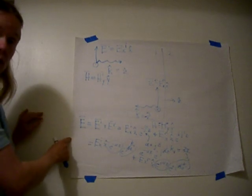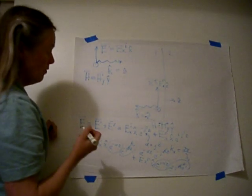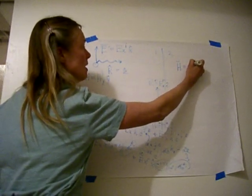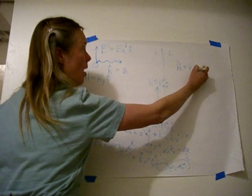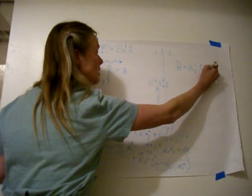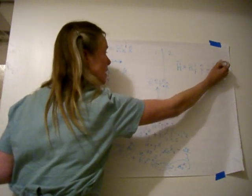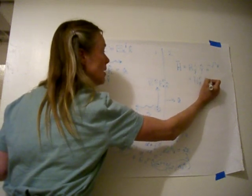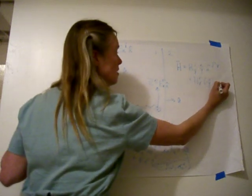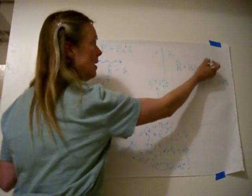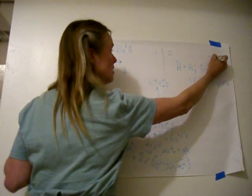Now we've been able to write the equation for the electric field. Now let's also write the equation for the magnetic field. The magnetic field, also in that same region, is equal to Hy incident in the y direction, e to the minus gamma z plus Hy reflected in the minus y direction, e to the plus gamma z. Again, gamma is alpha plus j beta.